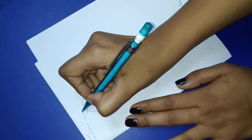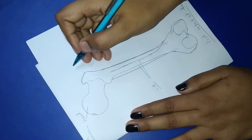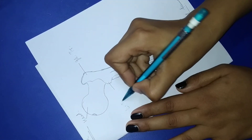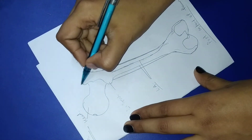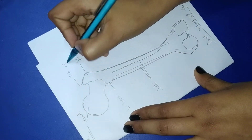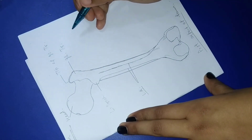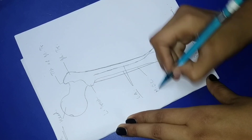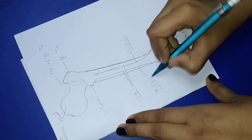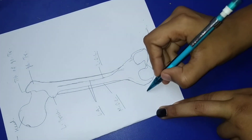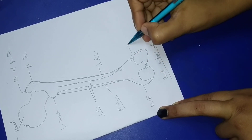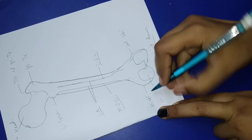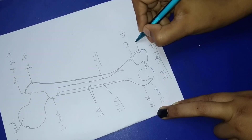This is the head of the femur, this is the greater trochanter, this is the lesser trochanter, and this is the tip of the greater trochanter. After that you can see this is the medial supracondylar line and this is the lateral supracondylar line. After that this is the medial epicondyle, this is the lateral epicondyle, this is the medial condyle, and this is the lateral condyle.